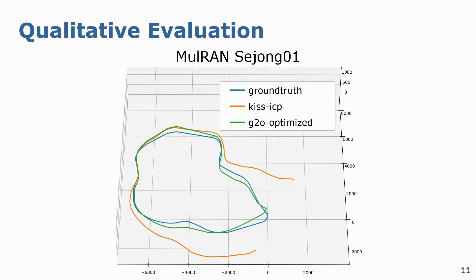We also evaluate the effectiveness of detecting loop closures at a local map level by performing pose graph optimization after incorporating the loop closures detected by our approach. Even though we obtain fewer loop closure constraints due to using local maps instead of individual scans, they are sufficient to optimize the trajectory and correct the global drift. This drift correction can be visibly noted for the Mulran dataset long highway sequence, which was drifting over three kilometers based on just LIDAR odometry estimates.